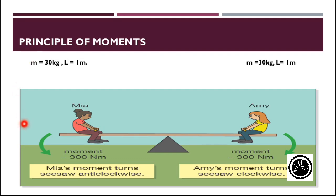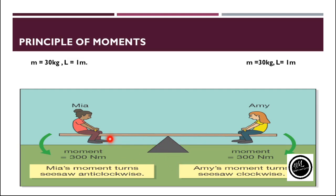For this we have an example of a seesaw here. This seesaw has been fixed at a particular axis — this is the particular axis where it is fixed. About this fixed point the seesaw is about to rotate. As you can see here we have two girls on either sides of the seesaw, so there will be a certain amount of force acting on the seesaw because of their weights, which is acting downward.